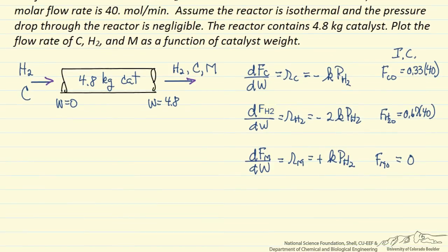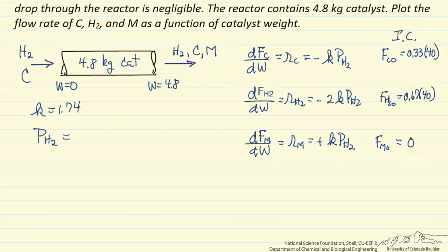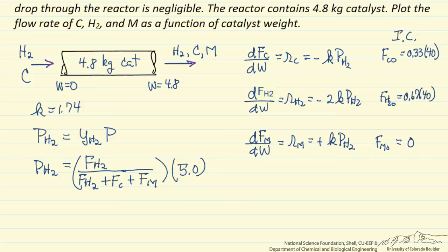To solve these equations we need some additional information, of course we need the rate constant. And then we need to write the pressure of hydrogen in terms of molar flow rates so that we have sufficient equations to solve this. So the pressure of hydrogen is the mole fraction of hydrogen times the total pressure, and the mole fraction is the molar flow rate of hydrogen over the total molar flow rate which is hydrogen plus reactant C plus product M, and the pressure is 5 bar. So the pressure of hydrogen at any point changes because the reaction also changes because there is a mole change for this reaction.